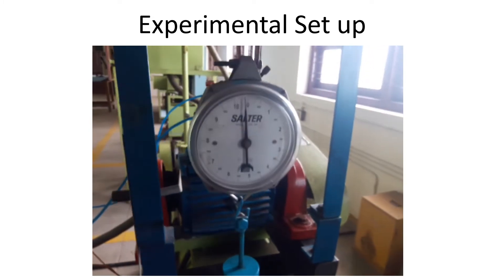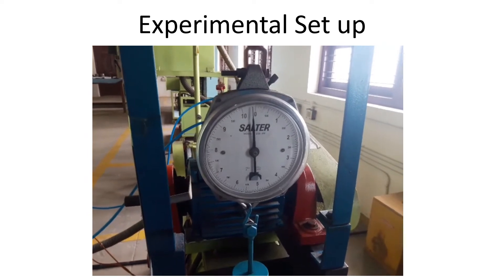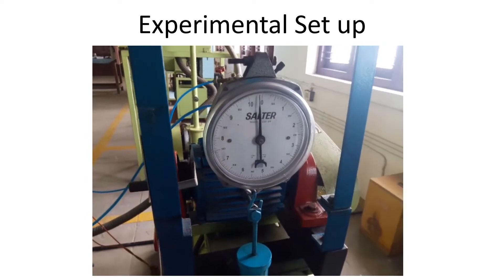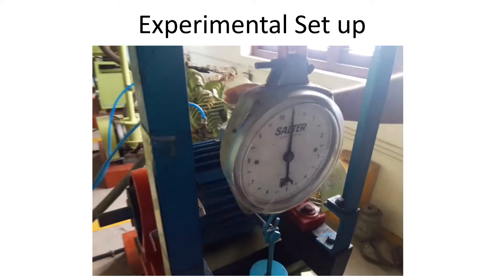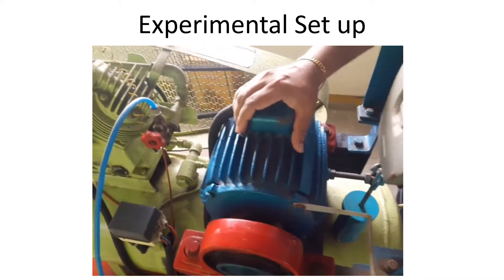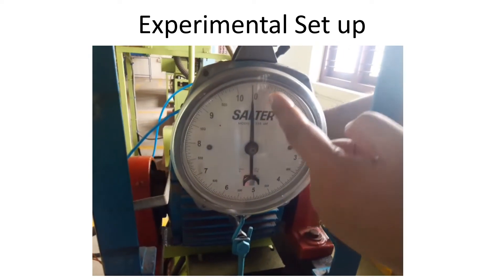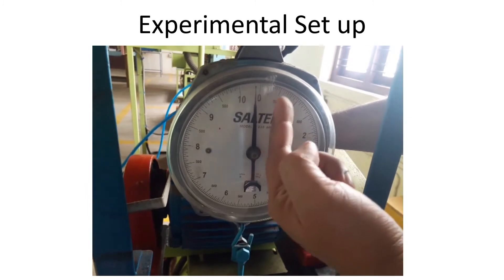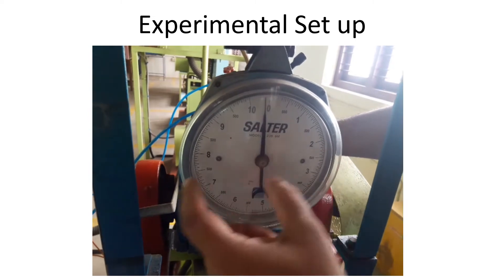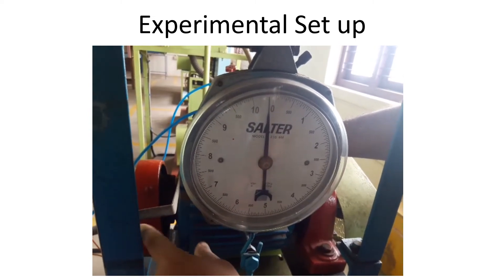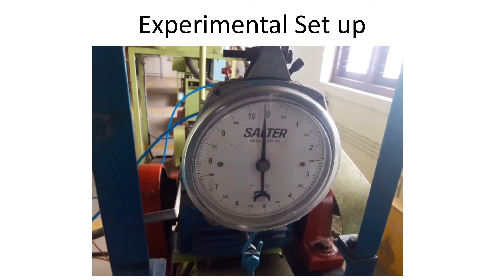When the delivery valve is slightly closed, the pressure will increase. Automatically, more power is required for the compressor to work — and we get that from the output power of the motor. The output power of the motor can be determined from the spring balance. When more power is taken, some force in terms of kilograms is noted, and that is multiplied with the arm length of the motor to get the torque. Once we get the torque, we can very easily find out the power, which is equivalent to the input power of the compressor.